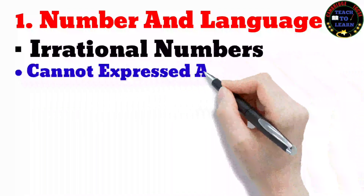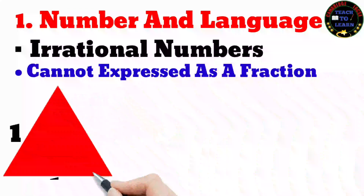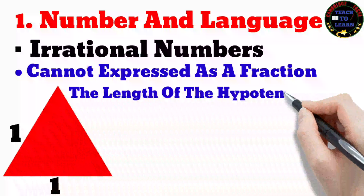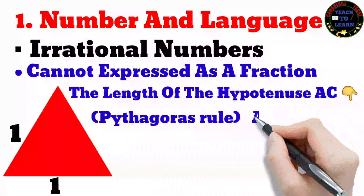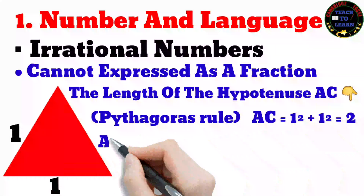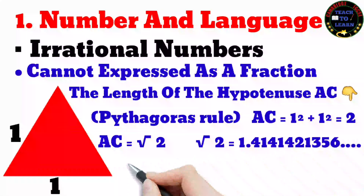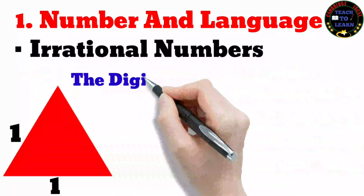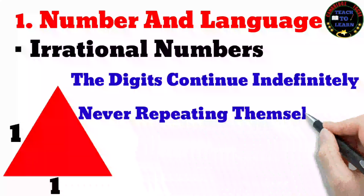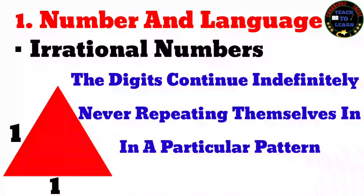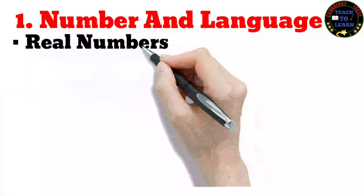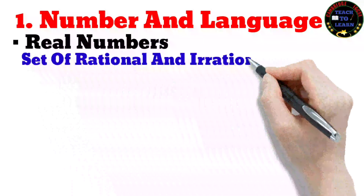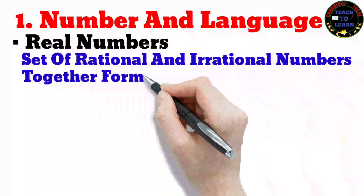Irrational numbers cannot be expressed as a fraction. As you can see in the diagram, the length of hypotenuse AC using Pythagoras' rule can be calculated, and the answer does not recur or repeat in a pattern — the digits continue indefinitely, never repeating themselves. Real numbers: the set of rational and irrational numbers together form the set of real numbers.